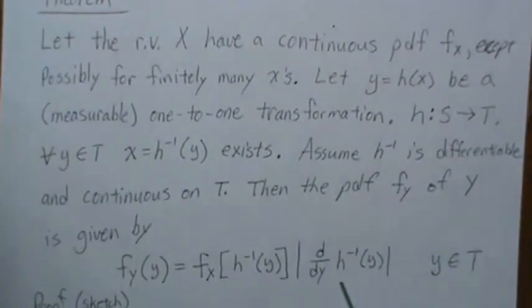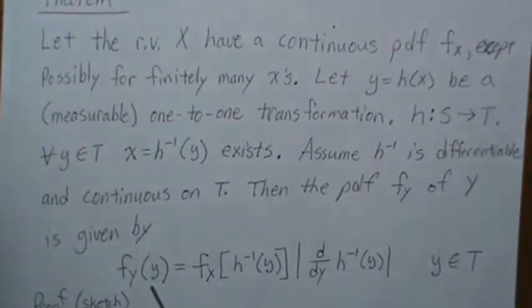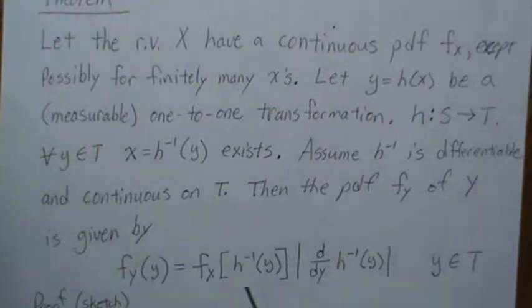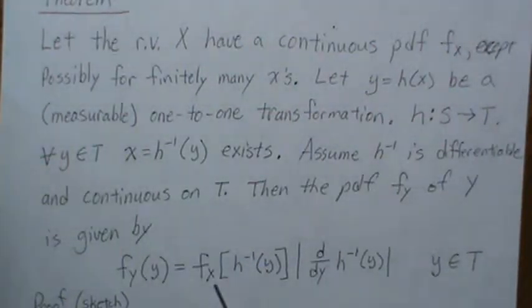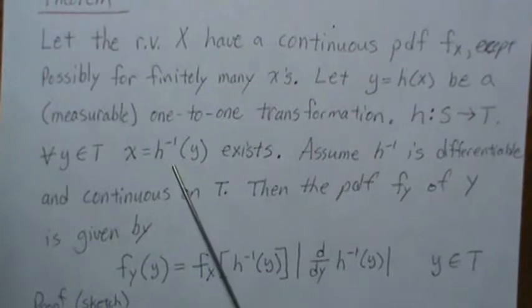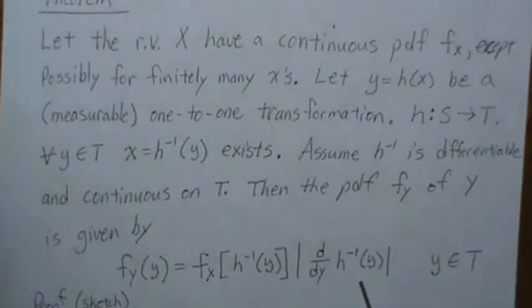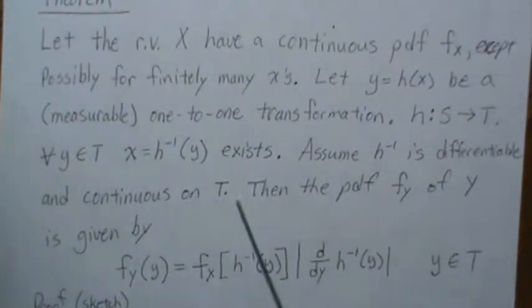The PDF F of Y is given by this formula: F of Y is derived from F of X, where you plug in the inverse function and multiply by the Jacobian, which is the derivative of your inverse function.